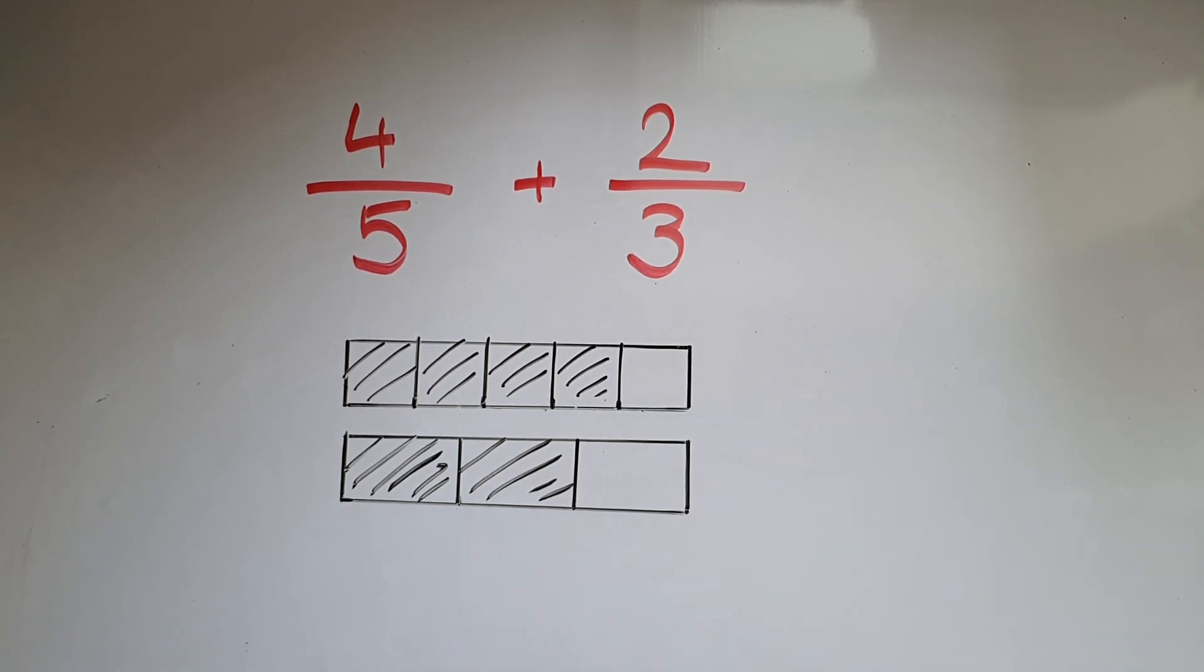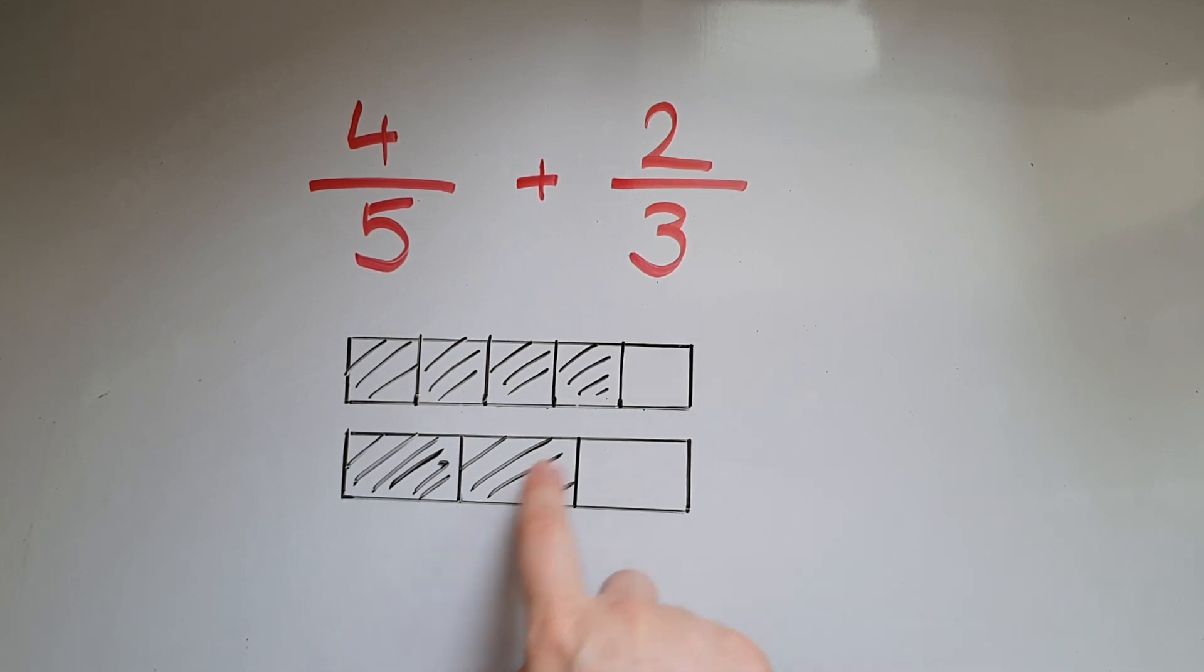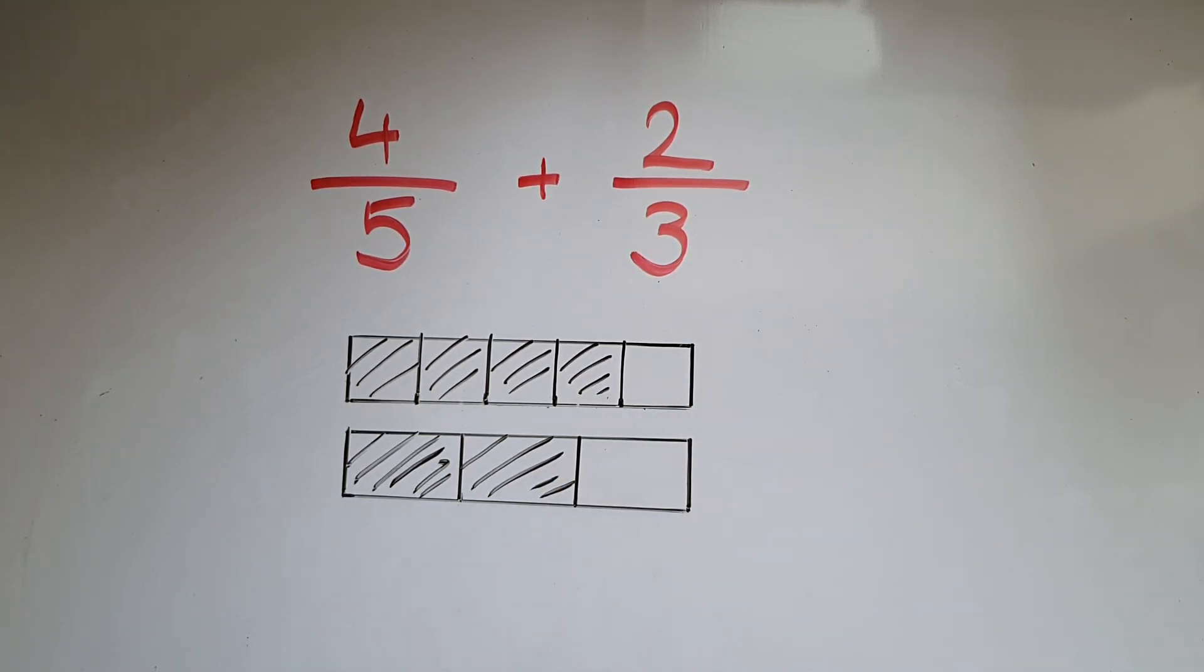Now as they are at the moment, they are of different slices. These slices are bigger, these ones are smaller. So how do we add them?